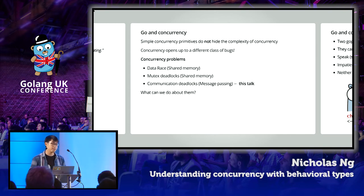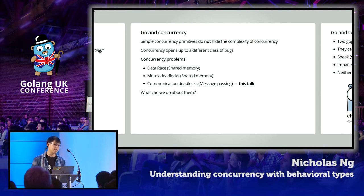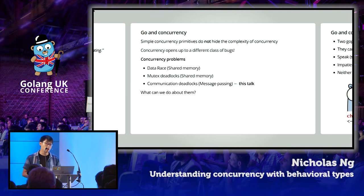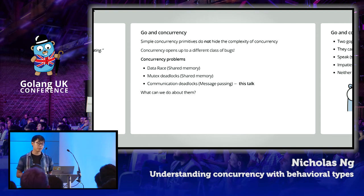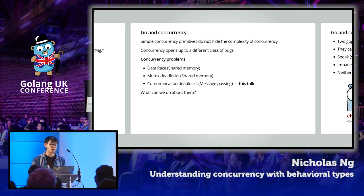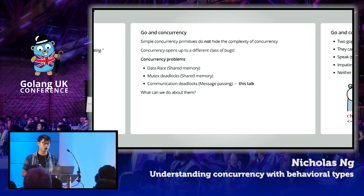For instance, you can have data races where multiple goroutines try to access the same shared variable, leading the program to an inconsistent state. Or if you use a mutex to protect your shared variable and lock and unlock it in the wrong way, you can easily get into mutex deadlocks. But today I want to focus on the message passing side of concurrency and the kinds of concurrency problems that can come with it, such as communication deadlocks.